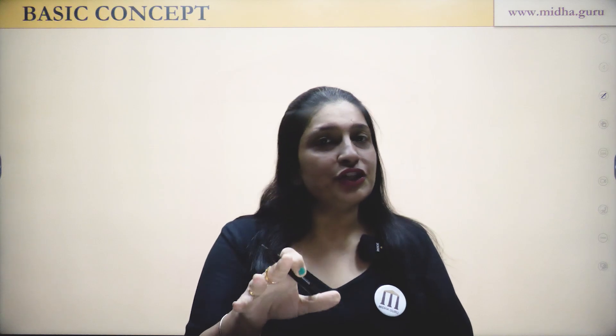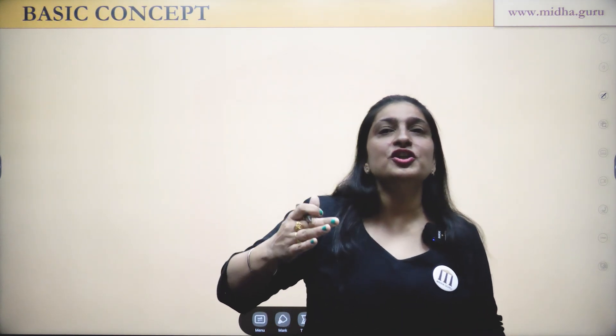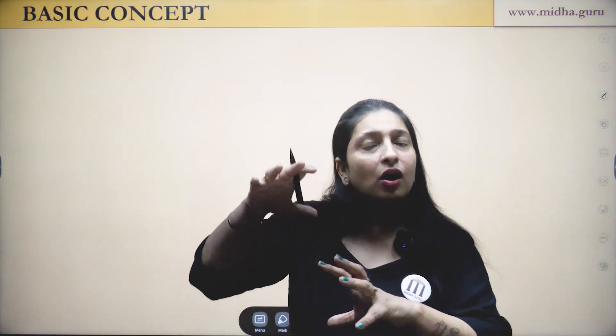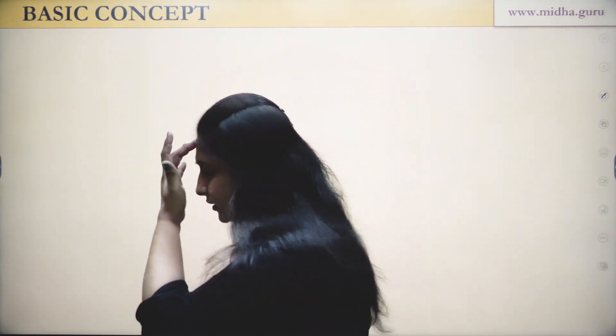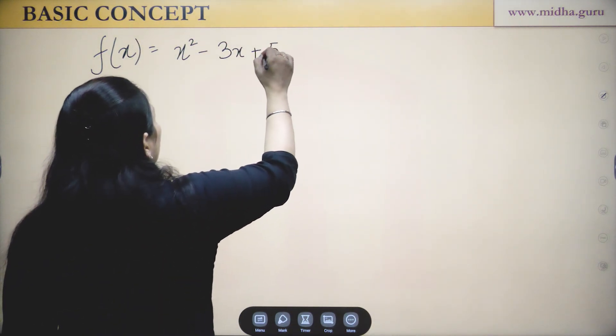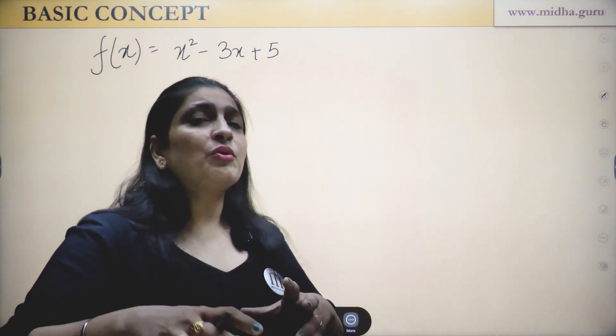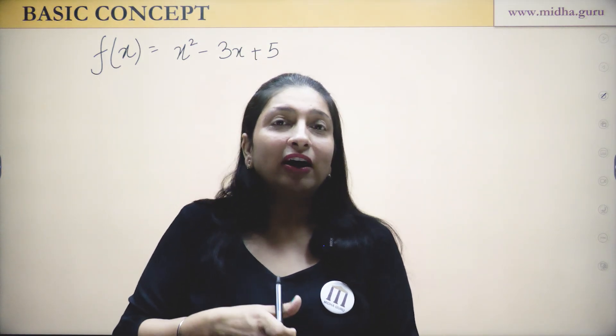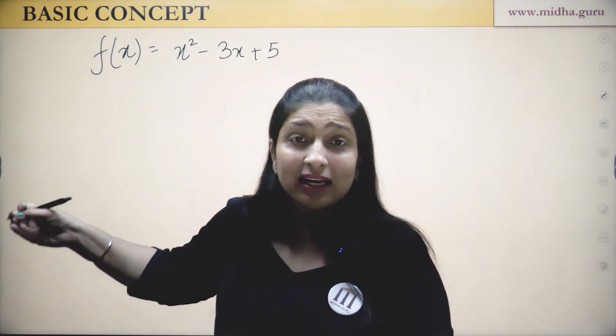Let us first refresh our memories for polynomial division. You have studied this in junior classes — dividing a polynomial with a monomial, binomial, or trinomial. You must remember that when dividing with a binomial or trinomial, you perform the long division method. We are going to perform that long division method to get a quotient and a remainder. But before that, let's discuss a very basic concept: f(x) equals x² minus 3x plus 5.